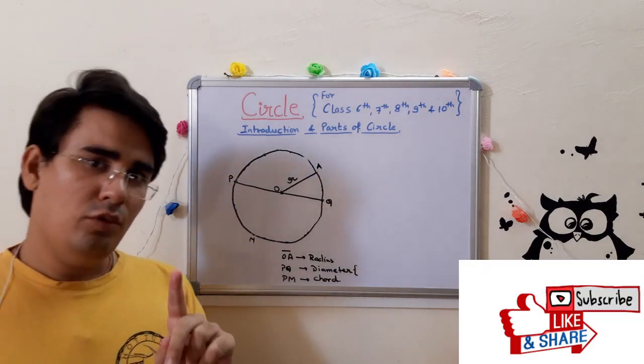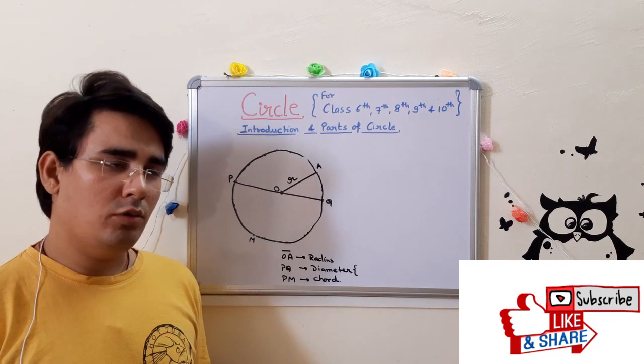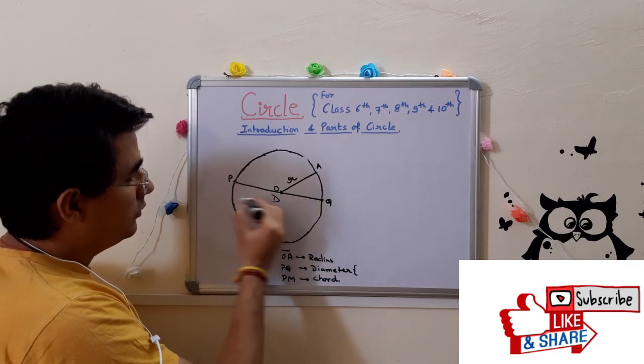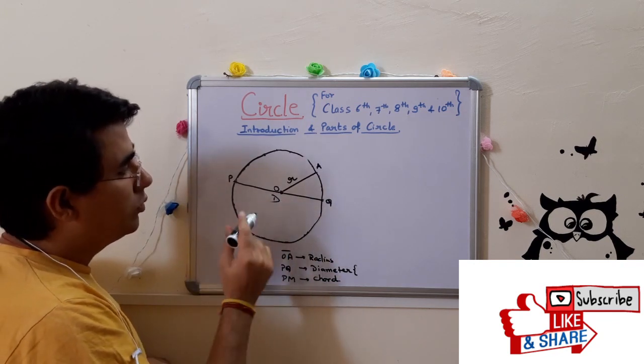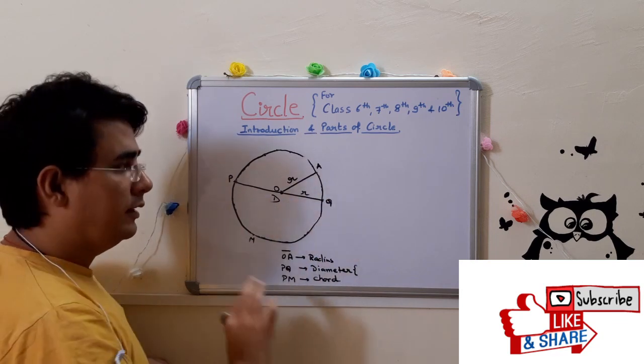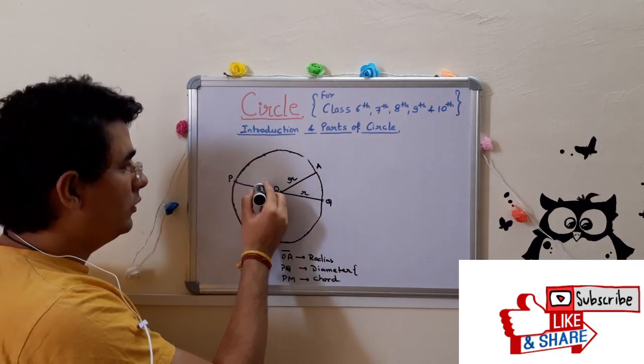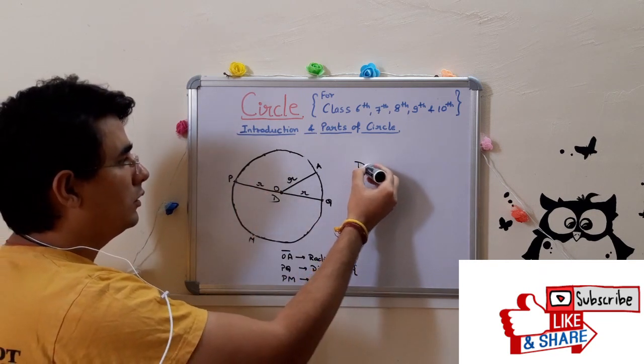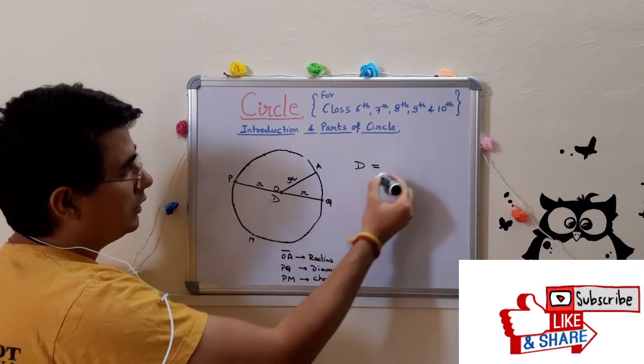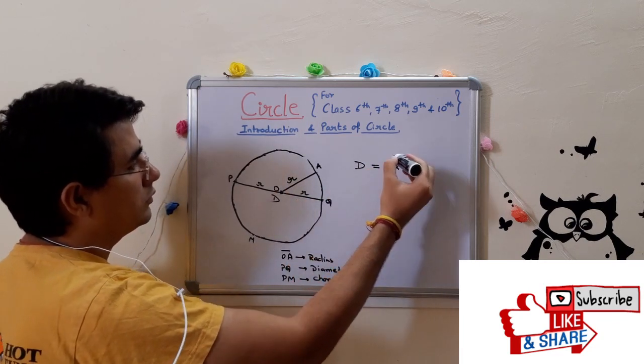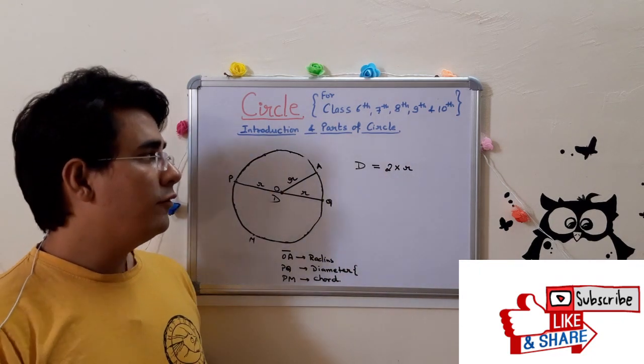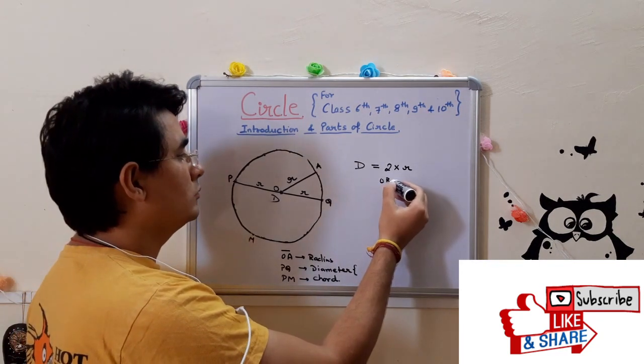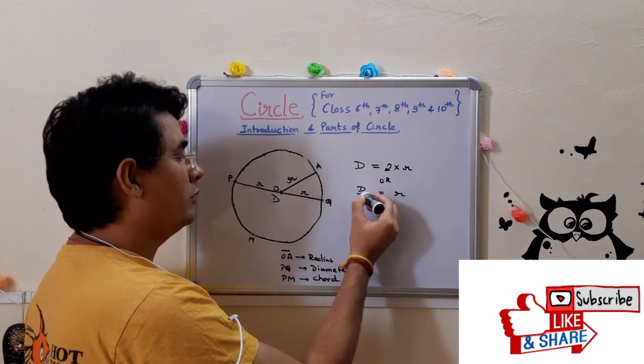Now moving ahead, one more property of diameter which is very important. PQ is the diameter. OQ, what is this? It is a radius. And what is OP? It is a radius. So I can say that diameter is nothing but two times radius. So this is a formula: diameter equals to two times radius. And radius equals to diameter by two.